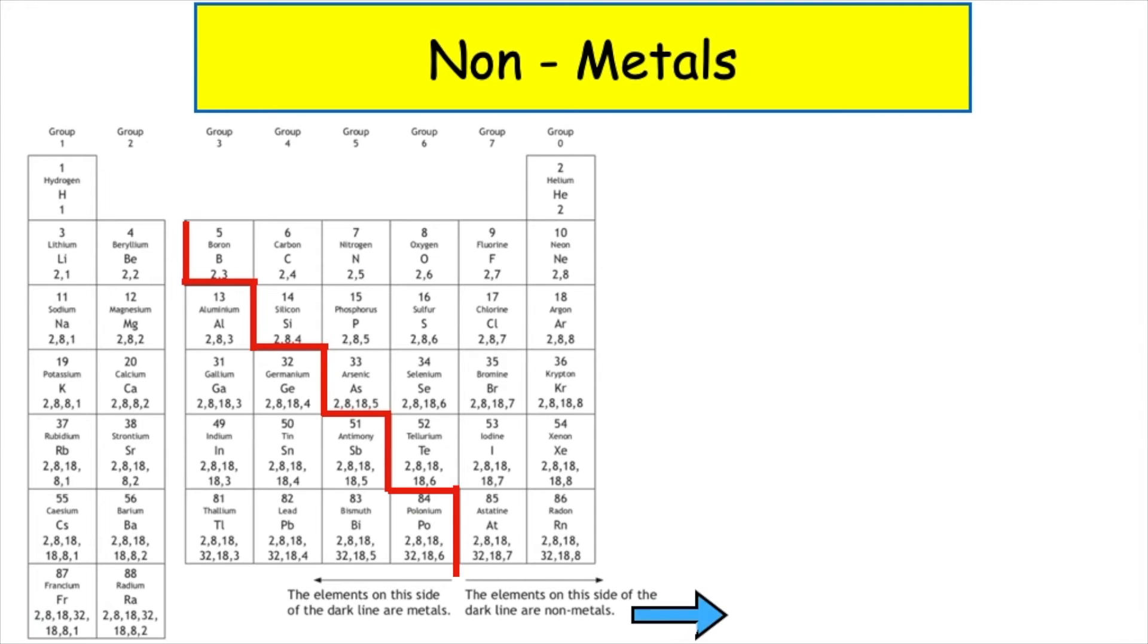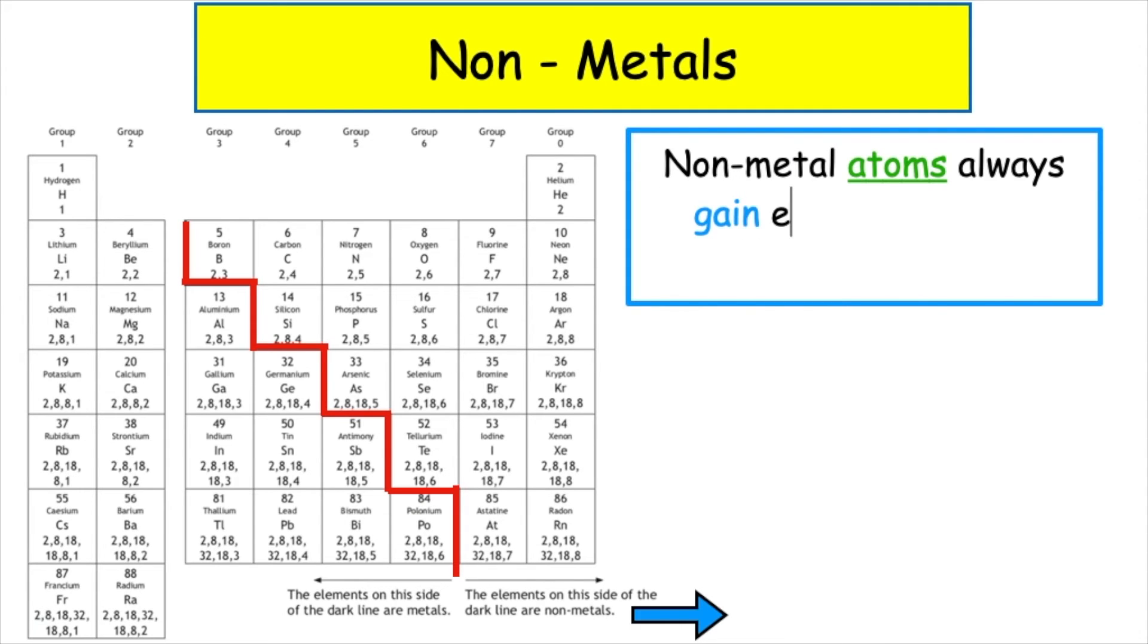Non-metal elements can be found on the right-hand side of the periodic table. Non-metal atoms always gain electrons to form negative ions.